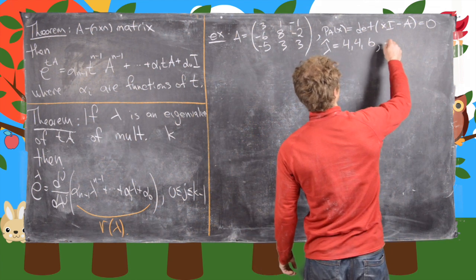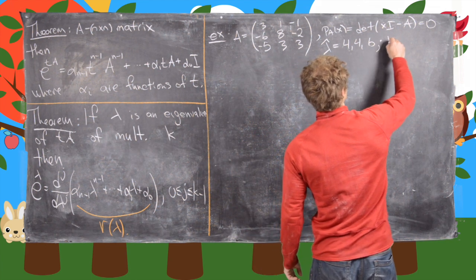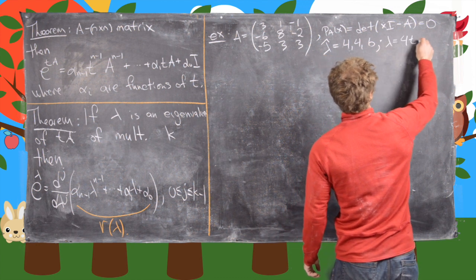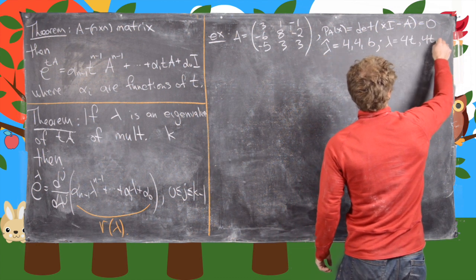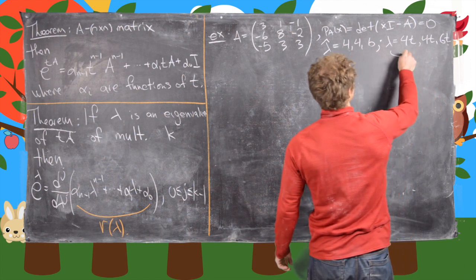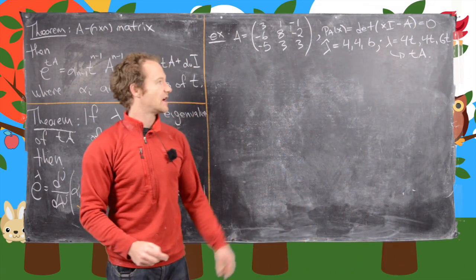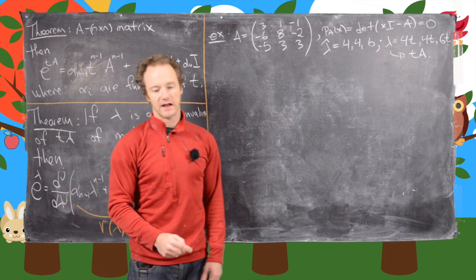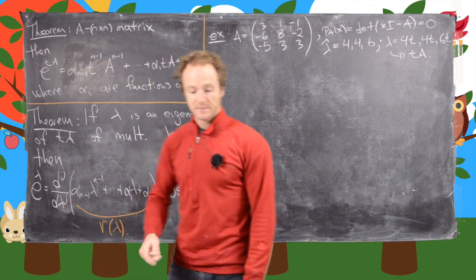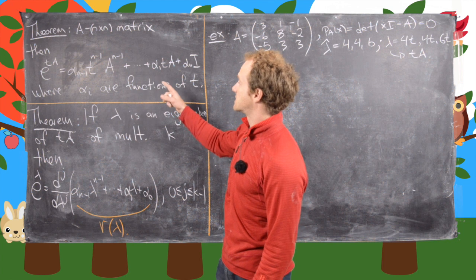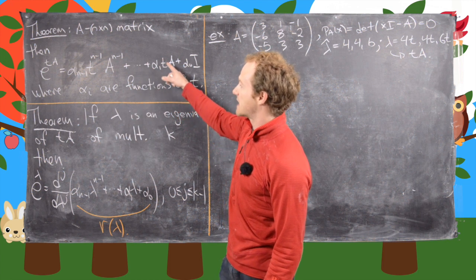Okay, so now what we want to say is maybe we'll say lambda equals 4t or 6t. And this is as an eigenvalue of tA. So the eigenvalues of A and tA are related in that way. Okay, now the next thing that we want to do is notice that this theorem